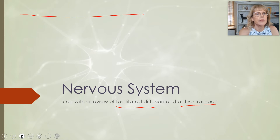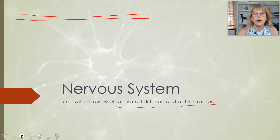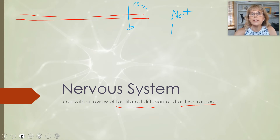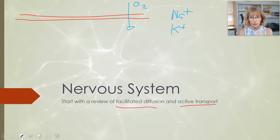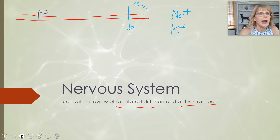Here we're going to have the phospholipid bilayer. The phospholipid bilayer will allow some things to go straight through, like oxygen, but there are other things that are not allowed to go through, like sodium and potassium. Sodium and potassium are the central parts of this particular story. So if the body wants sodium or potassium to go through the cell membrane, it needs to have a facilitated diffusion channel.